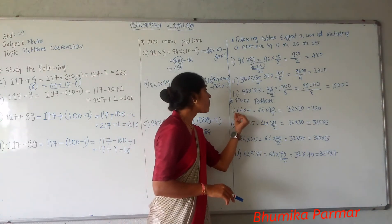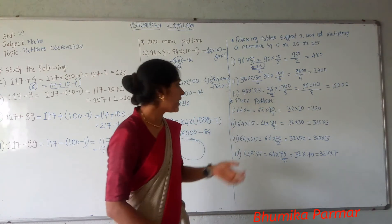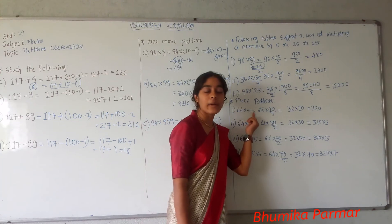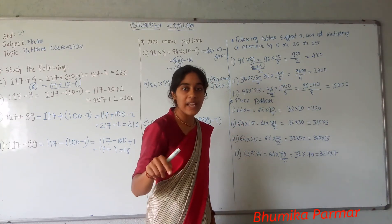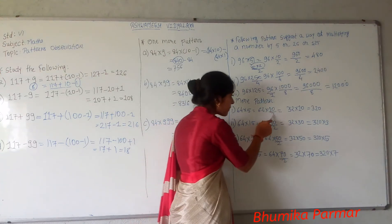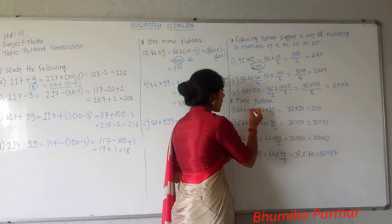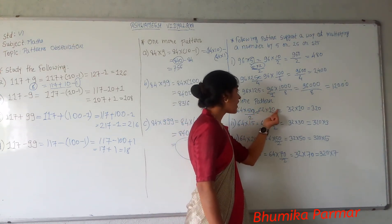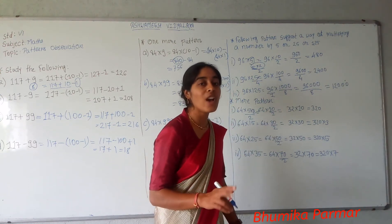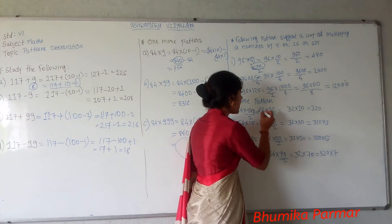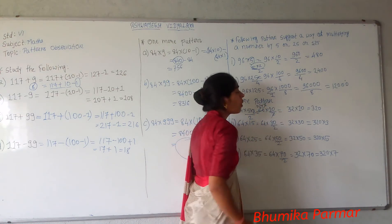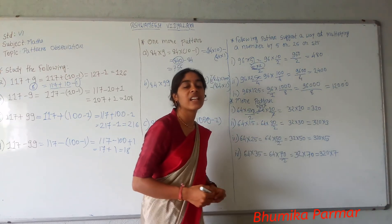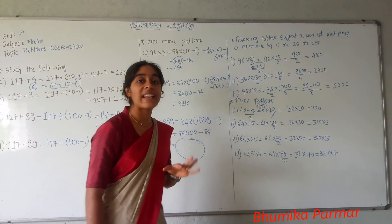For 64 into 5: this number is 5, and we write 5 as 10 divided by 2. So 64 into 5 is 64 into 10 by 2. If we multiply by 2 and divide by 2, we simplify. So 32 into 10, and the multiplication gives 320. Without any lengthy calculation, you can get this quickly in your mind.